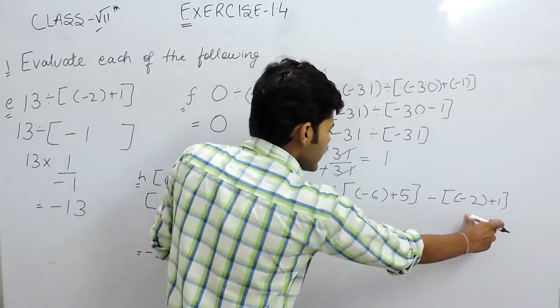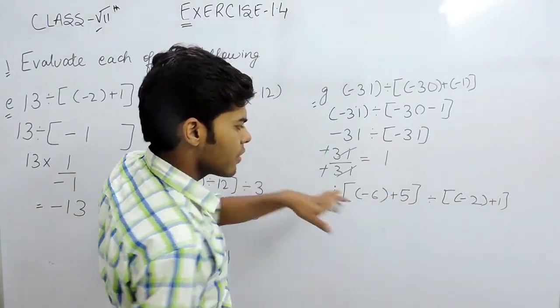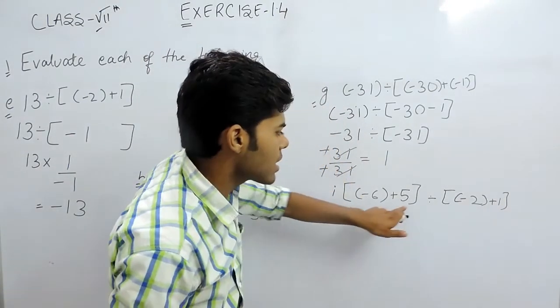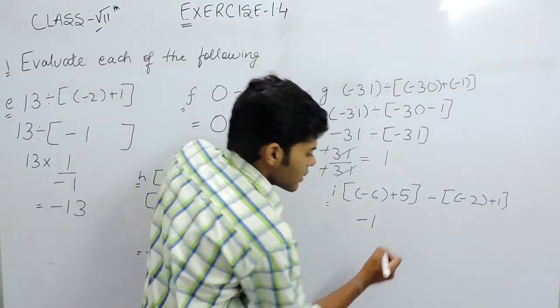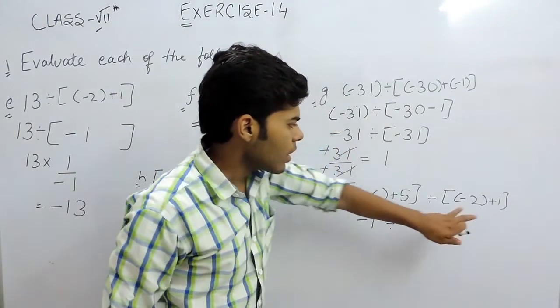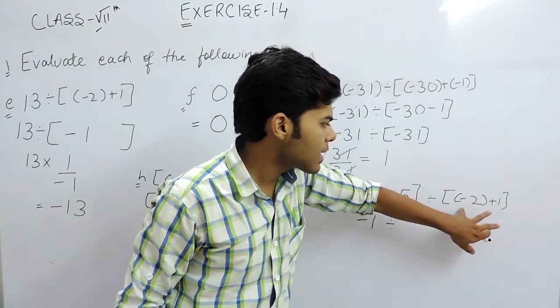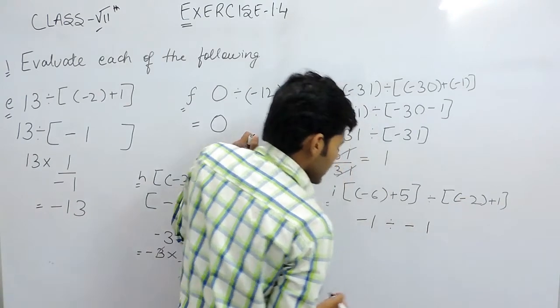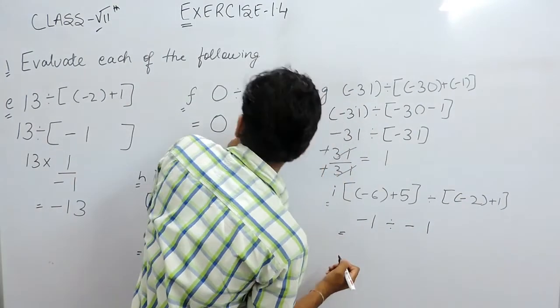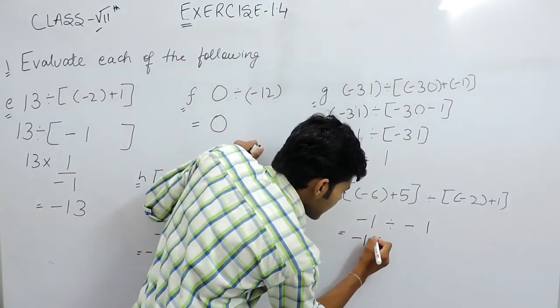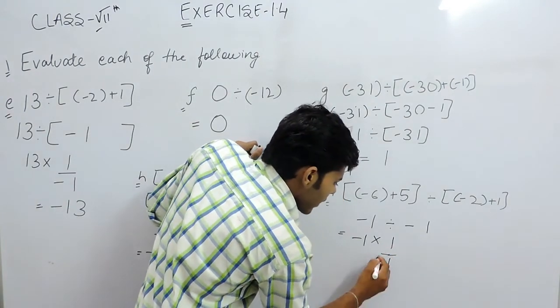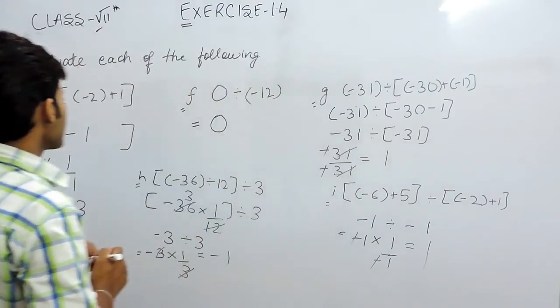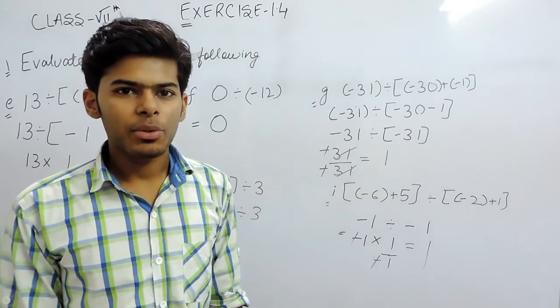Now the last part. We'll solve these two brackets. So minus 6 plus 5. First we normally subtract the terms. That will be 6 minus 5 is 1 and sign of a greater number is minus. So minus 1. Now the second bracket: minus 2 plus 3 plus minus 1 is 0. So we can write this like minus 1 multiplied with 1 upon minus 1. Minus minus gets cancelled out and answer will be 1. This is how you can solve these type of questions. Thank you.